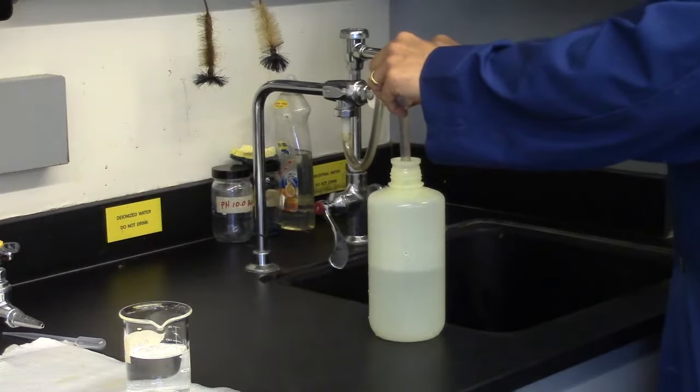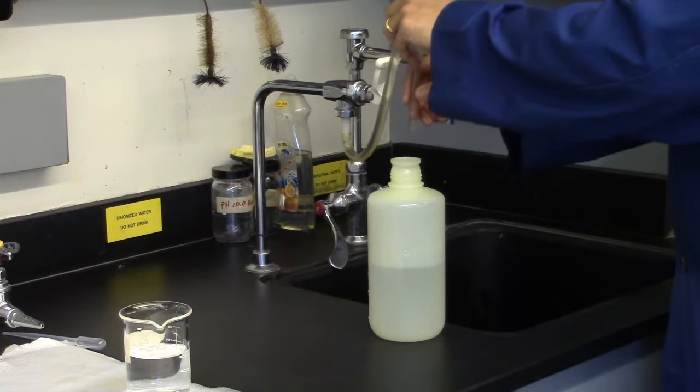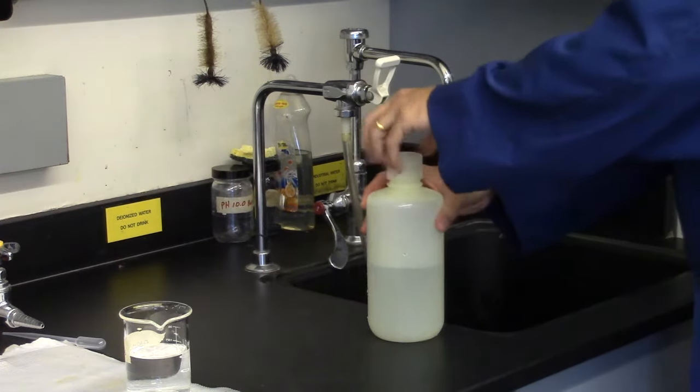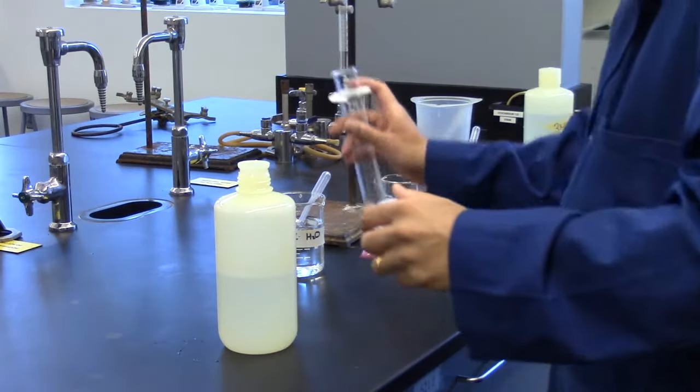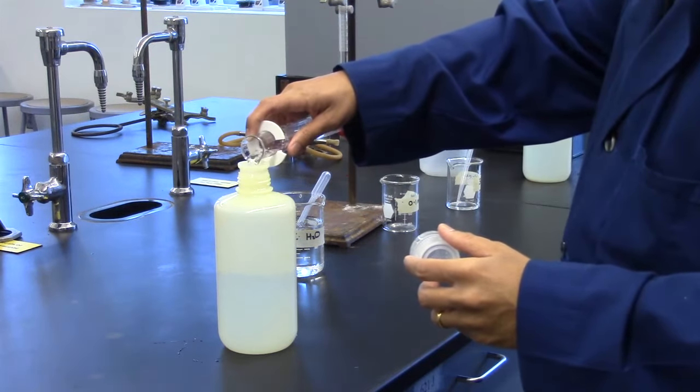To be certain the solution is mixed thoroughly, fill the 1 liter bottle halfway with distilled water. Add the 33 ml of the 3 molar sodium hydroxide to the 1 liter bottle.